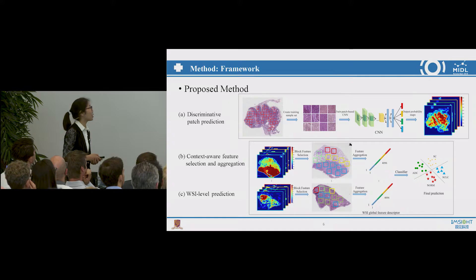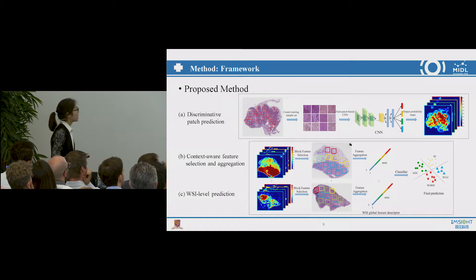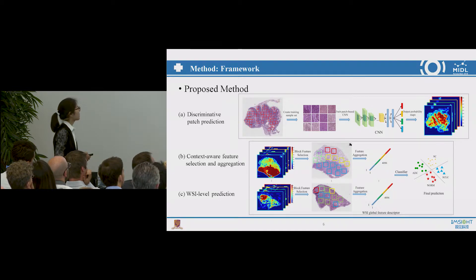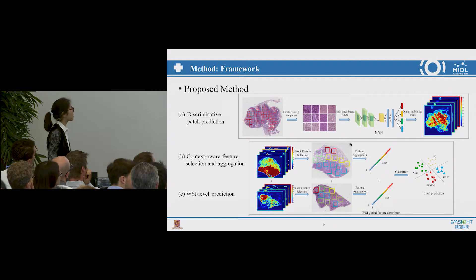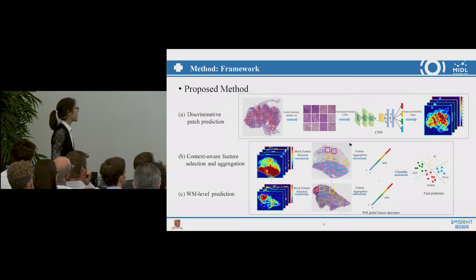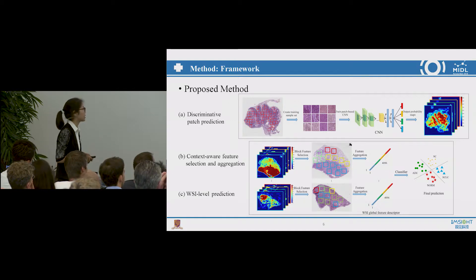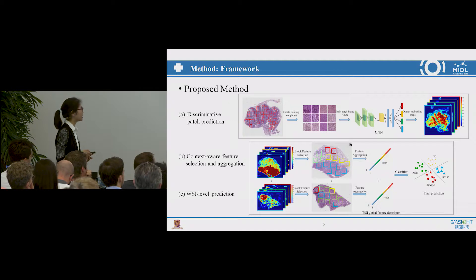Inspired by the previous work, we proposed our method, which consists of three parts that overcome the drawbacks of prior work. The first part is a patch-based CNN trained to output the cancer likelihood, which helps us find the discriminative regions. Then, we take rich spatial information into account and propose several context-aware feature selection and aggregation strategies to obtain global features. Lastly, a random forest classifier is employed to output the image-level prediction.